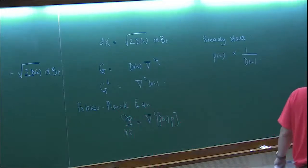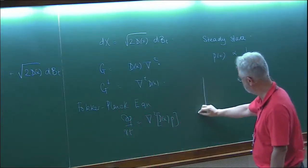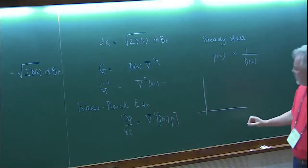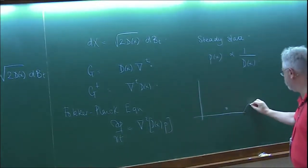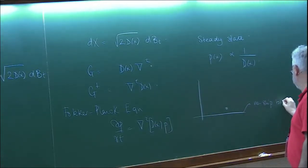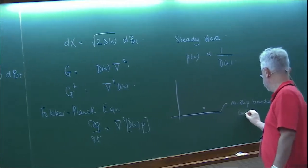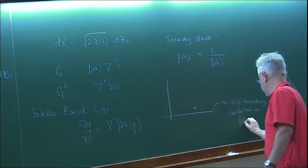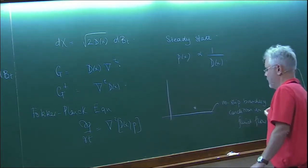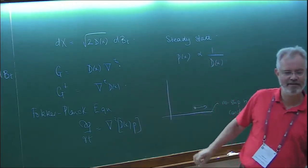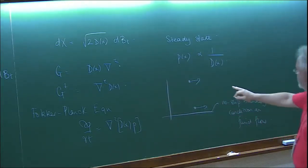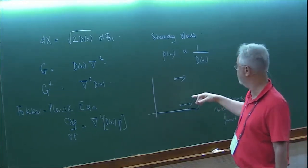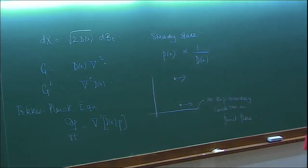If you know fluid mechanics, when you do the Stokes calculation near a solid surface, you have a no-slip boundary condition on the fluid flow. Calculations by Brenner and others show the drag is much bigger near the surface than in the bulk, so the mobility is different — there is a variation of the diffusion constant. You must take into account this drift to correctly describe molecular diffusion.